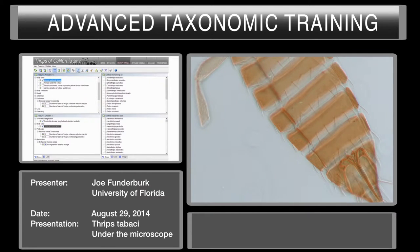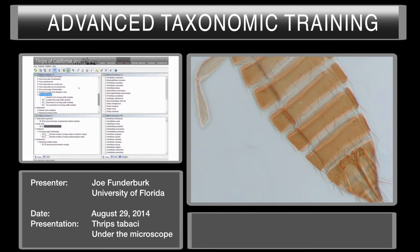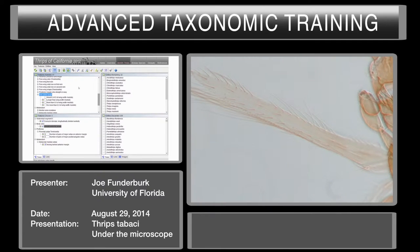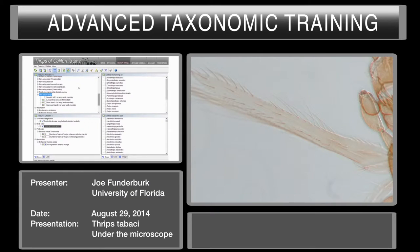Now going to the next best character, we're down to 22 species. It's asking for vein CD length medially. That's a little bit difficult to see at this magnification, but I think we can see it clearly enough. It's pretty obvious that we would say between 0.3 and 0.5 of wing width medially. Based on experience, sometimes you get a little confused — if you're not sure, you could go on to the next best character, but it seems clear enough.